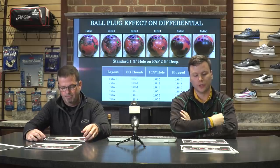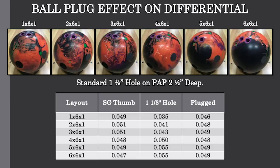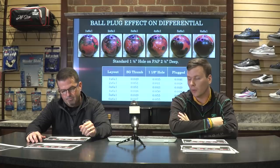Let's move on to differential. We have the same six Supersonic bowling balls, and we're now looking at total differential. On the first line, that hole was one inch from the pin. We had 49 total differential once drilled with no balance hole, and we see it goes down to 35 — consistent with what we've been seeing in part one of the video series. Take a look at what happens when it's plugged: we go all the way back up to 46. Not quite back to the original 49, but we are getting about three-quarters of the way there once again.